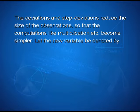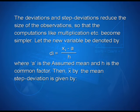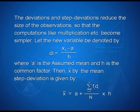Let the new variable be denoted by d_i, that is d_i = (x_i - a) / h, where a is the assumed mean and h is the common factor. Then the mean x-bar by step deviation is given by x-bar = a + (summation of f_i * d_i from i = 1 to n) / n * h.